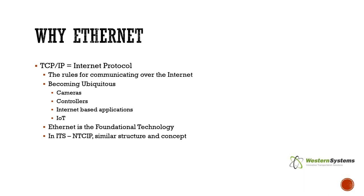So why Ethernet? Ethernet is based on the TCP/IP protocol, otherwise known as internet protocol. It is the rules for communication over the internet and is becoming ubiquitous — meaning it is everywhere. Every device you touch that sends data has an Ethernet receiving point at one end or the other. Devices using Ethernet today include cameras, controllers, internet-based applications, and Internet of Things — they are all based on TCP/IP protocols. In ITS, something similar called the NTCIP standard is similar in structure and concept to Ethernet.